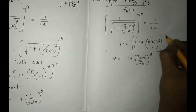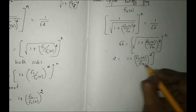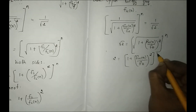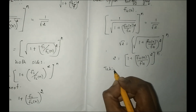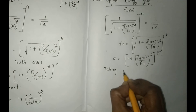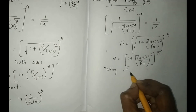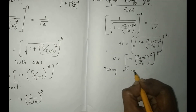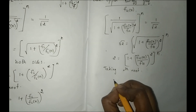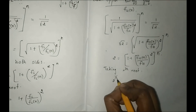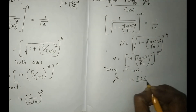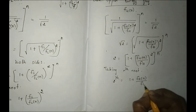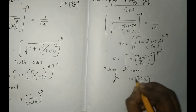This is raised to the whole power n. Next, to cancel the n, take the nth root on both sides. So 2 to the power 1/n is equal to 1 plus fH(n) divided by fH, the whole squared.